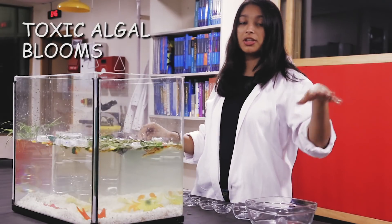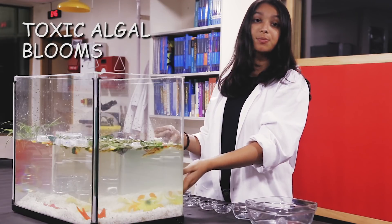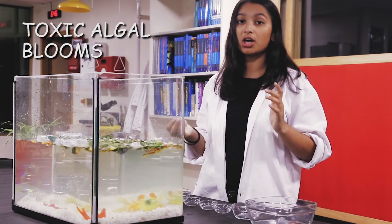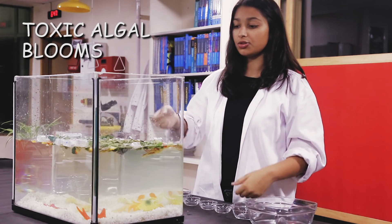These algal blooms cover the entire surface of the water. It's very harmful as they not only block the sunlight from reaching the various plants and animals underneath, but they're also toxic. So whenever animals eat these, they end up dying. This often leads to a dead zone.